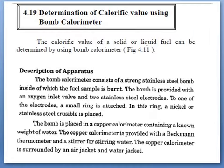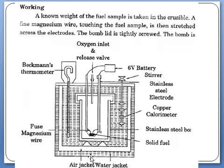The bomb is placed in a copper calorimeter containing a known weight of water — the entire stainless steel bomb assembly is placed inside the copper calorimeter filled with water. The calorimeter is provided with a Beckman thermometer and a stirrer for stirring the water. The copper calorimeter is surrounded by an air jacket and then a water jacket.